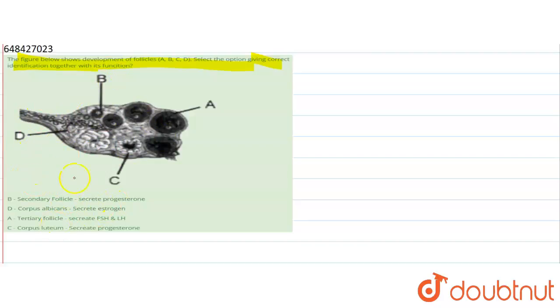So let's see, this is the diagram. First one is B. B is given as the secondary follicle and it secretes progesterone. So it is the wrong option because it is not a secondary follicle, it is a primary follicle.